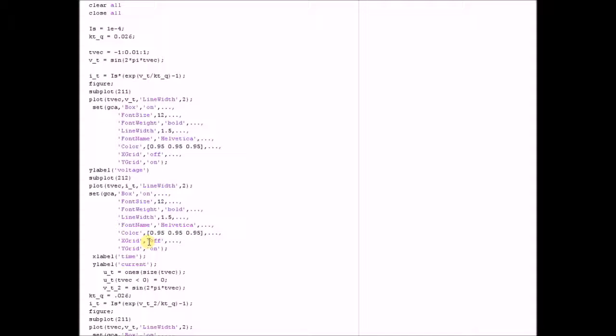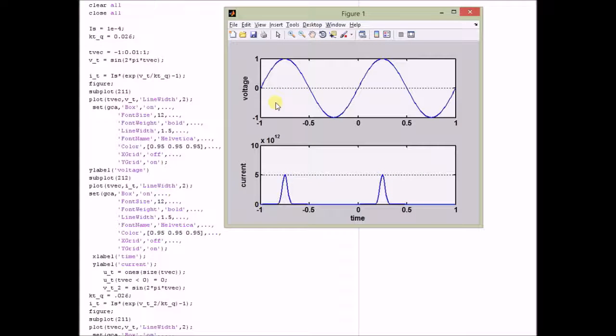This MATLAB code can be used to generate the input and output for the given equation. By choosing a sine wave for the input voltage V of t, we can obtain the output current I of t. We can clearly see that the current I of t is basically a couple of pulses.